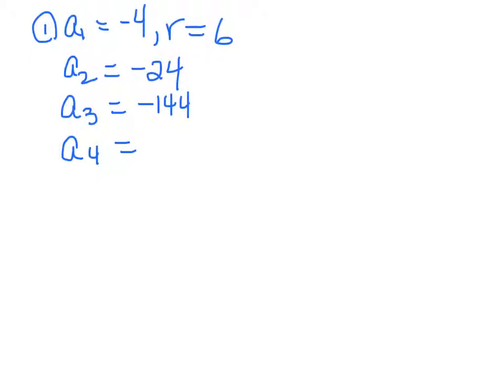Number 1 gives you that a sub 1 is negative 4 and it tells you that the r is 6. So all you're going to do is multiply by 6 each time. So then your a sub 2 should be negative 24, because negative 4 times 6 is negative 24. Then you're going to do the same thing for a sub 3. And then you're going to do the same thing for a sub 4. You're going to multiply negative 24 times 6. So I'm going to take out my calculator and I'm going to do negative 24 times 6 and I'll get negative 144. And then I'm going to multiply that times 6 and I'm going to get negative 864. So that's all that first section wants from you, numbers 1 through 6.